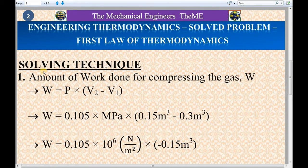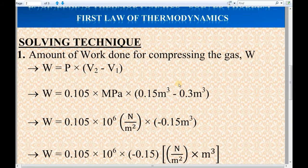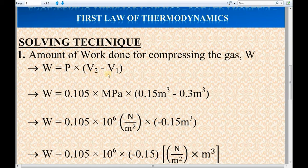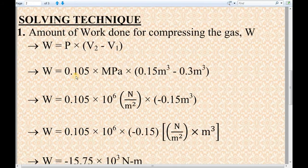Now I will move to the solving technique. First, we will find the value of amount of work done for compressing the gas, taken as W. The known formula for work done during constant pressure process is W equals P into V2 minus V1. In this formula, we know the values of P, V2, and V1, so just substitute the values.